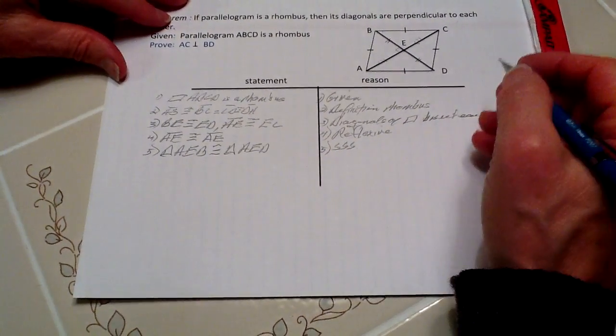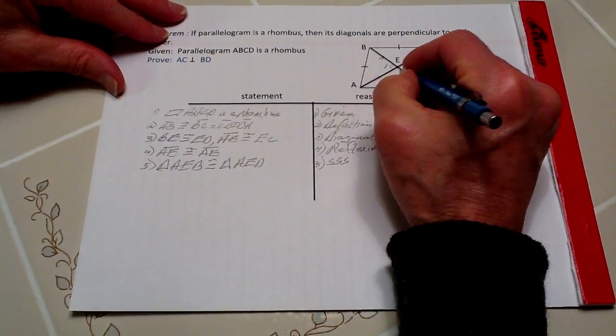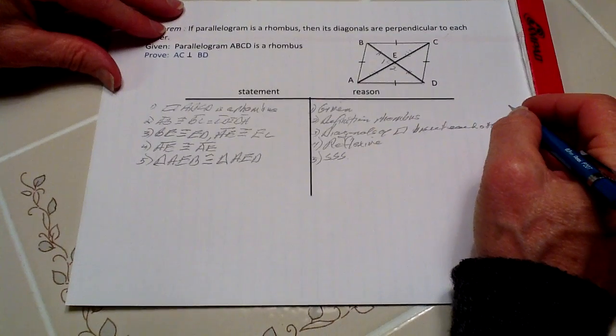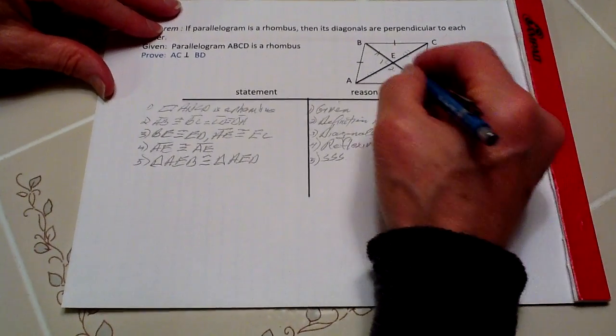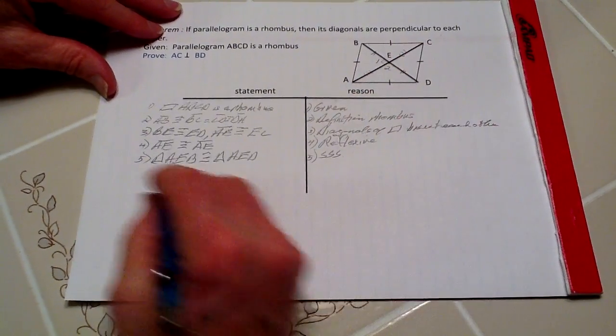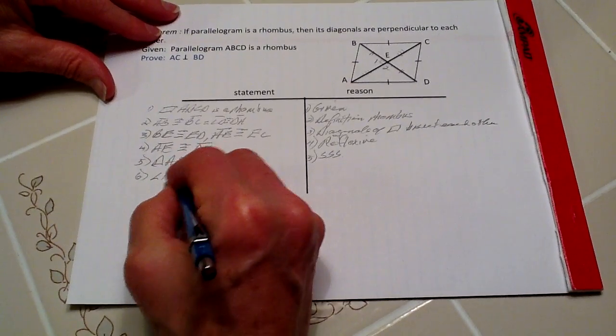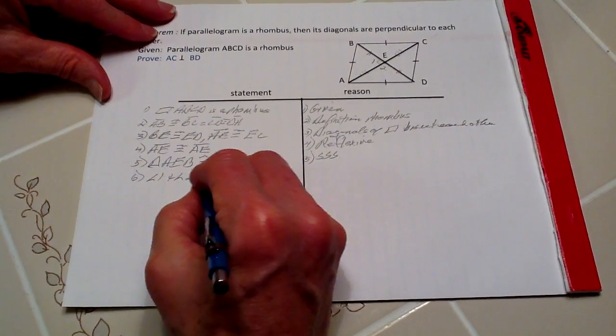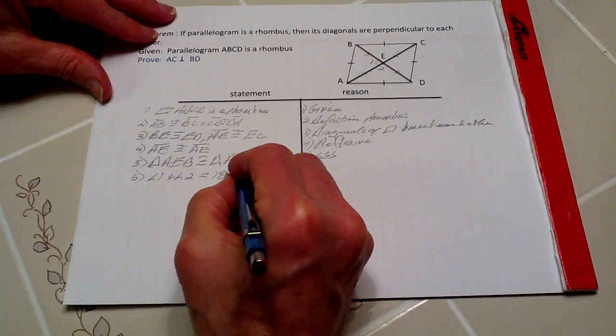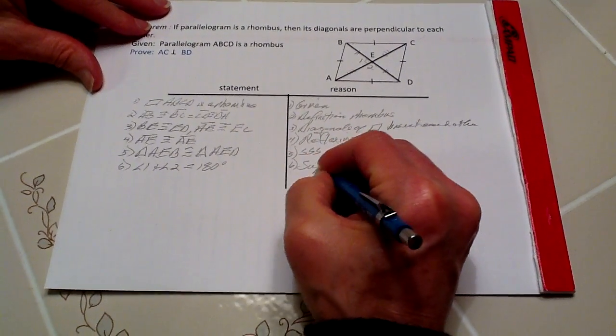Now, we know that angle one and angle two are supplementary because they're along a common straight angle and they're adjacent angles. So step six, angle one plus angle two equals 180 degrees because they are supplementary.